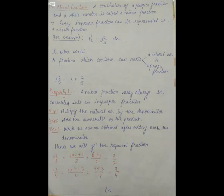Fourth, mixed fraction: a combination of a proper fraction and a whole number is called a mixed fraction. Every improper fraction can be represented as a mixed fraction. For example, one and one by two, three and two by five, etc. In other words, a fraction which contains two parts — a natural number and a proper fraction. Three and two by five can be written as three plus two by five.